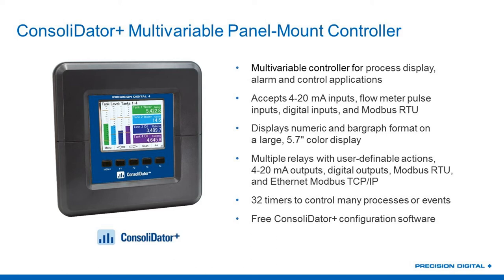It has RS-485 and Ethernet connectivity, meaning you can use all of the features we'll discuss on your RS-485 network, and then have an Ethernet network connected so you can pull data out to a remote system via Modbus TCP/IP. There is a lot that the Consolidator can do, and if you're interested in learning more — especially once you see these additional Modbus features — I'd ask you to reach out to us. We have training material, demo units, and webinars just on the Consolidator Plus.